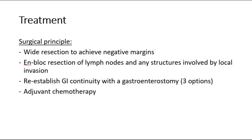For the treatment of gastric cancer, the surgical principle is to ensure there is wide resection to achieve negative margins, en-bloc resection of the lymph nodes and any structures involved by local invasion. After the resection, we will re-establish GI continuity with a gastroenterostomy. Adjuvant chemotherapy can also be done.